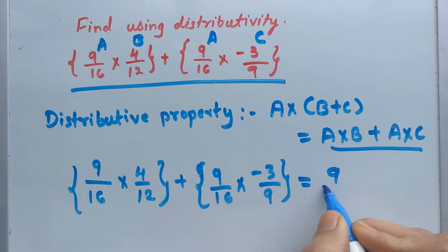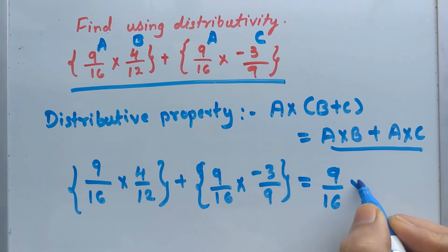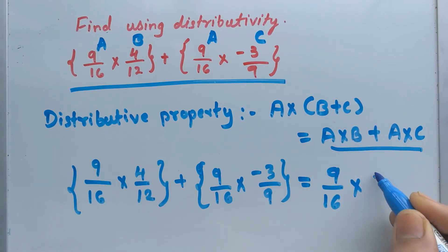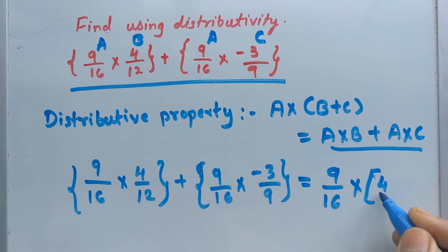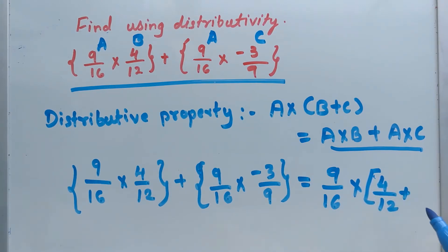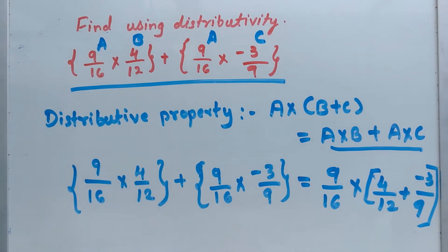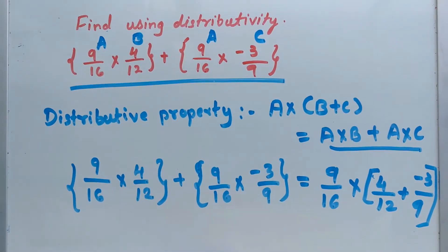So we have 9 divided by 16 multiplied by (b plus c), where b is 4 divided by 12, and c is negative 3 divided by 9. This gives us 9 over 16 multiplied by (4 divided by 12 plus negative 3 divided by 9).